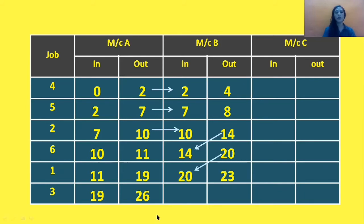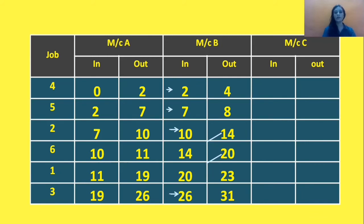We compare 26 and 23; 26 is greater. The logic here is that machine A will complete or finish a job before passing it to the next machine. Machine A completes the last job at minute 26, so we take 26 as the in time on machine B for the last job. The out time is 26 plus 5 equals 31. This completes in and out times for machine B.